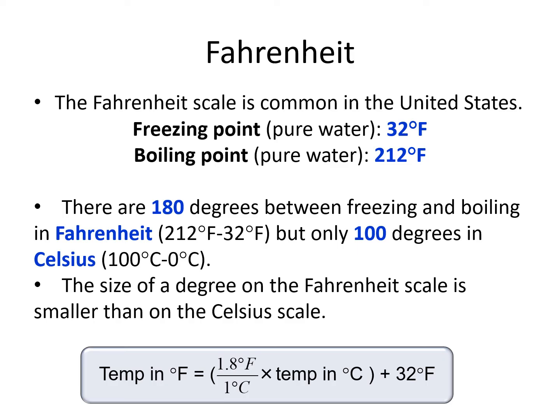The Fahrenheit scale is based on your everyday experiences. Zero degrees Fahrenheit is the coldest you are likely to experience going outside in winter, and 100 degrees Fahrenheit is the warmest you are likely to experience going outside in summer. There are temperatures above 100 and below zero in certain locations, but the scale was invented at a place and time in which this was the typical range. Using the Fahrenheit scale, the freezing point of water is 32 degrees and the boiling point of water is 212 degrees.